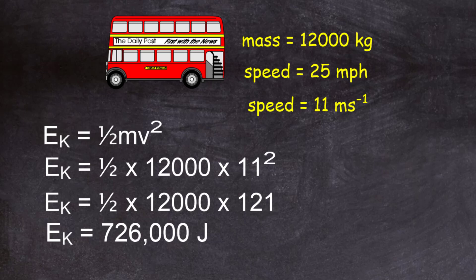So that gives you a number to hang your hat on for these energy values. 726,000 joules — think of a double-decker bus moving along a street at 25 miles per hour, and that would be its kinetic energy.